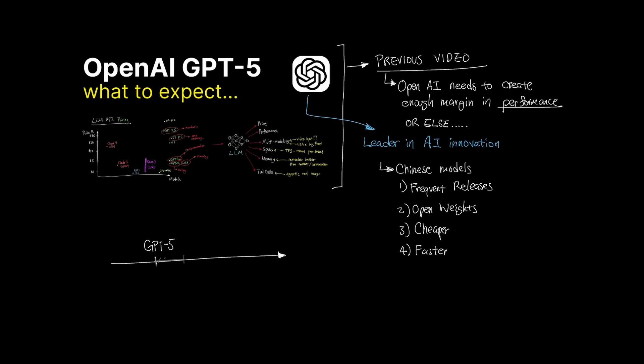With the release of GPT-5, I think OpenAI bought themselves maybe one or two weeks until the news cycle moved on to more exciting news from Grok, Gemini, Anthropic, and other Chinese models. And let's not forget about what Meta is cooking with their new super team.